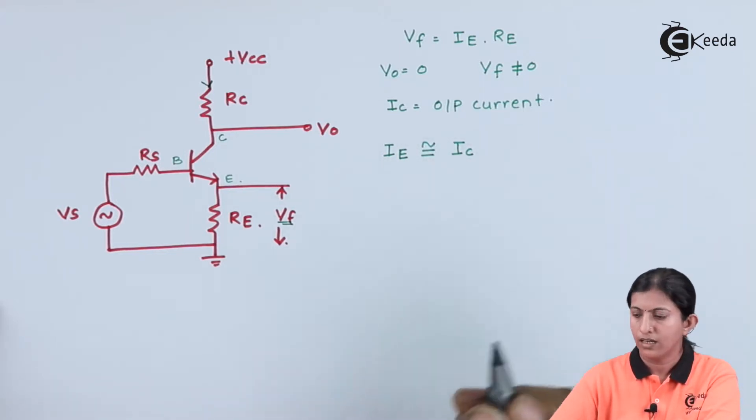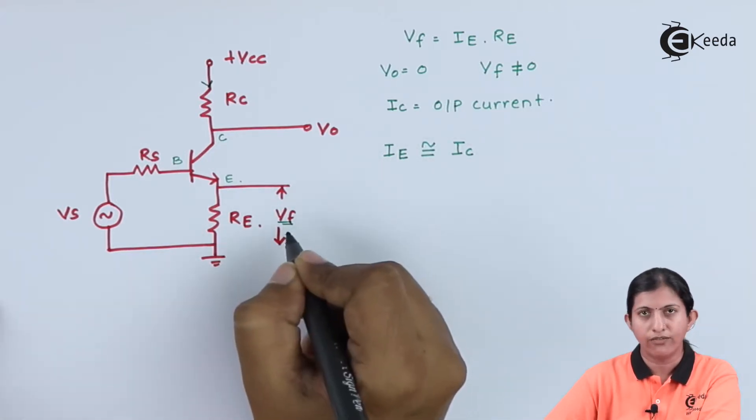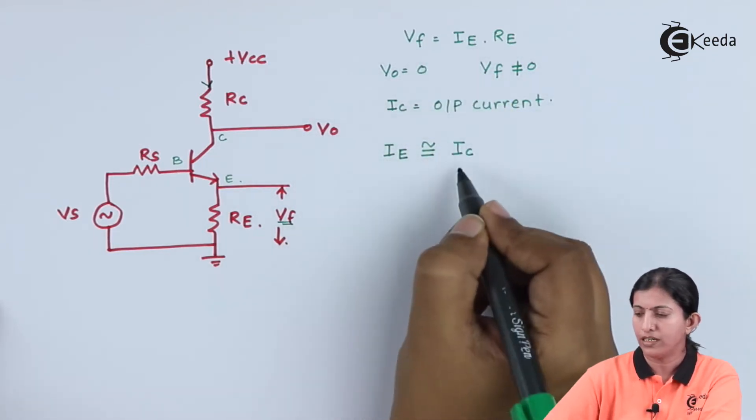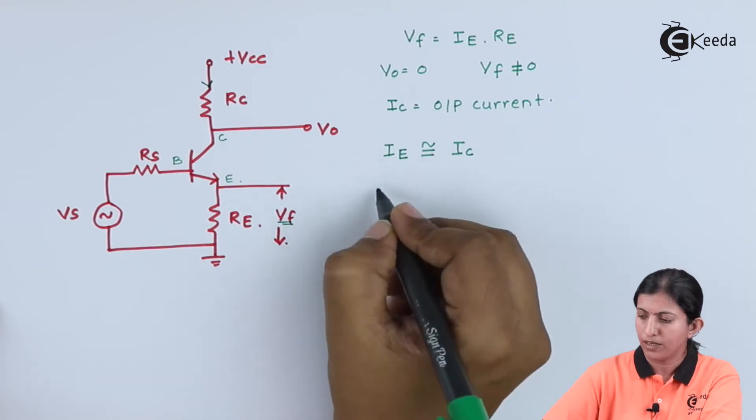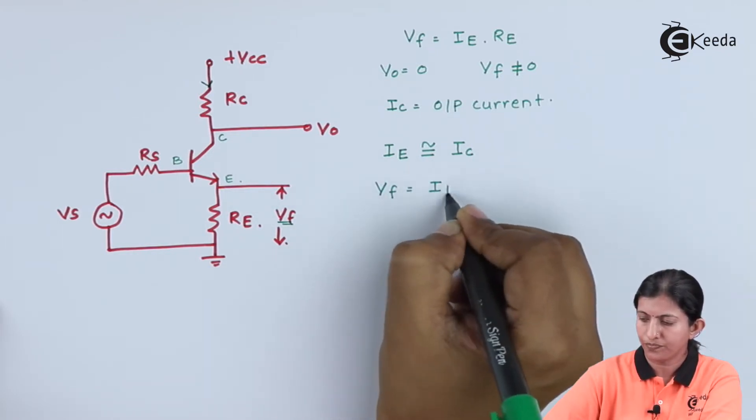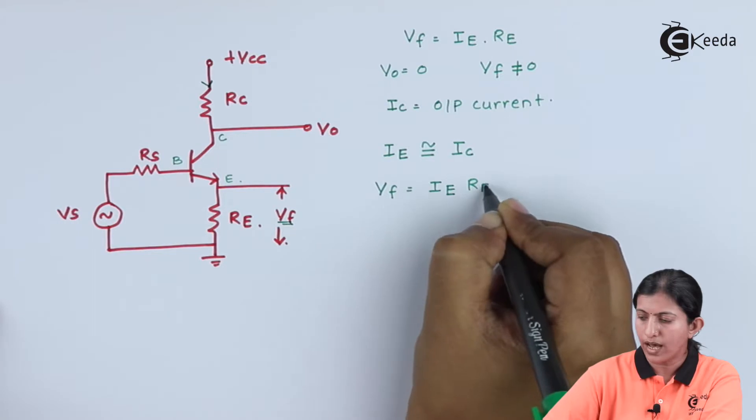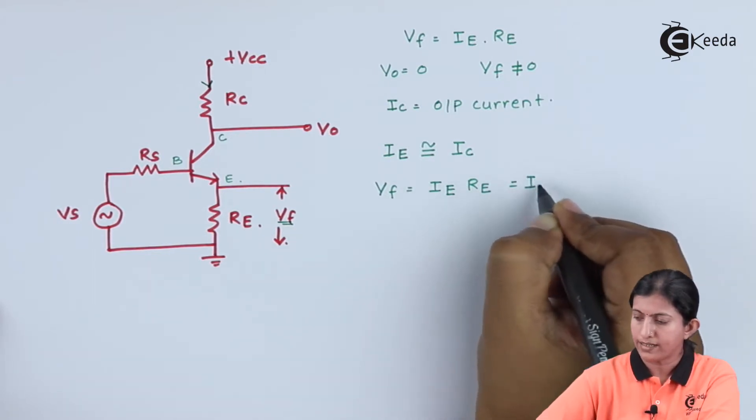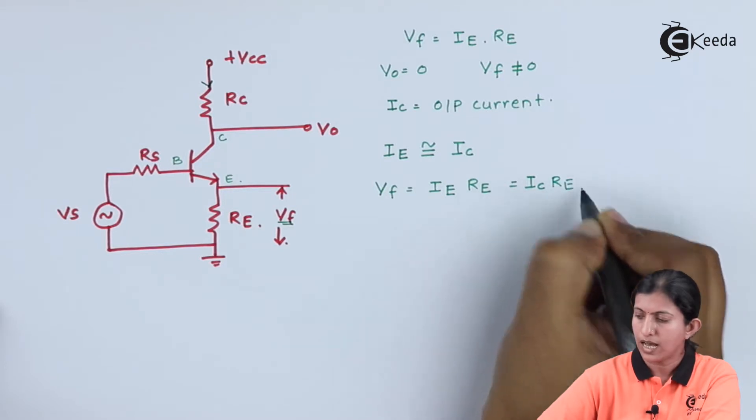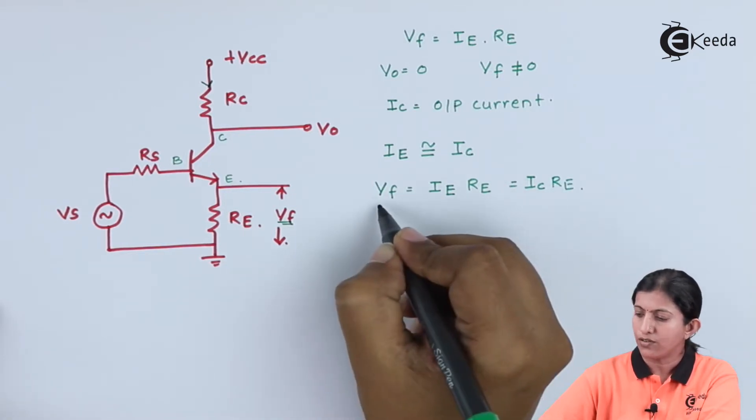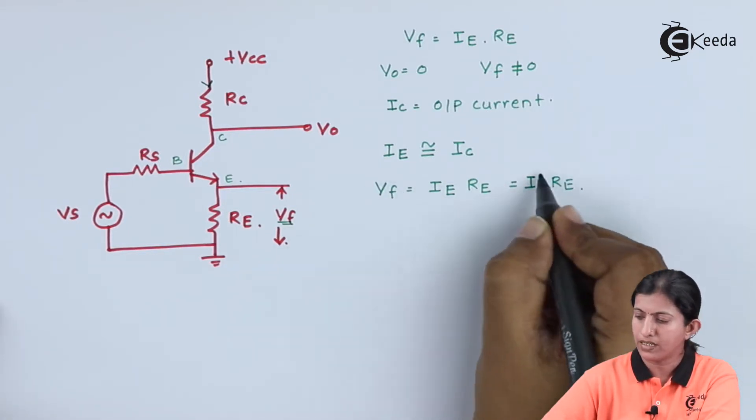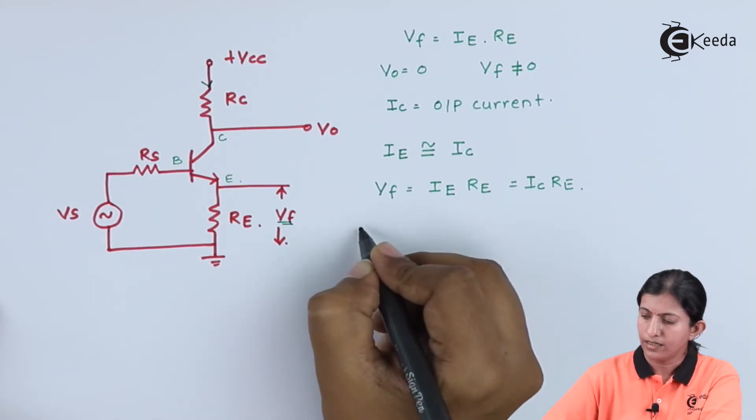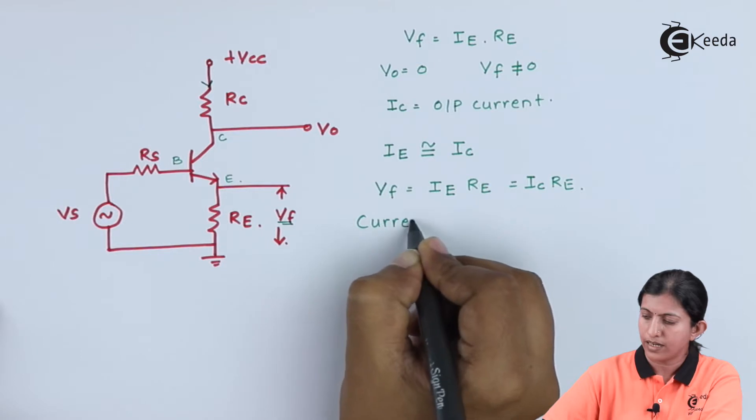Hence, the value of Vf which depends on Ie ultimately depends on Ic. Because we can write Vf is equal to Ie into Re which we can write as Ic into Re. And as Vf now depends upon the value of Ic, this sampling is current sampling.